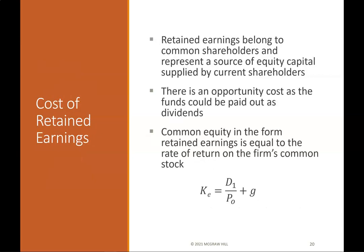Cost of retained earnings: Retained earnings belong to common shareholders and represent a source of equity capital supplied by current shareholders. There is an opportunity cost, as the funds could be paid out as dividends. The cost of common equity in the form of retained earnings equals the rate of return on the firm's common stock: K = D / P + G.